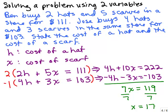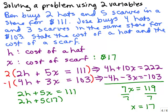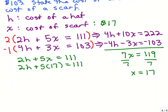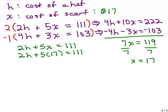So X is going to be 17. What did X stand for? Oh yeah, the cost of the scarf. So the cost of the scarf looks like it's going to be $17. Now I need to find the cost of a hat. So I want to take either of these two equations. I'll take the top one, 2H plus 5X equals 111, and I'm going to plug in 17 for X. So 2H plus 5 times 17 equals 111, and that way I'll be able to solve for H and know the cost of a hat.